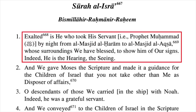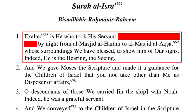Lots of Muslims are convinced that Surah 17 verse 1 of the Quran refers to the night journey. The verse says: 'Exalted is he who took his servant' — the translators add 'i.e. Prophet Muhammad' — 'by night, from al-Masjid al-Haram to al-Masjid al-Aqsa, whose surroundings we have blessed, to show him of our signs. Indeed, he is the hearing, the seeing.' Notice there's nothing about a flying donkey taking Muhammad to Jerusalem. Jerusalem isn't even mentioned. Later Muslims identified al-Masjid al-Aqsa as the Temple Mount, but this verse doesn't say any of that. Indeed, the verse doesn't even mention Muhammad — that was added by translators.